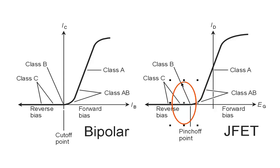But when we go into class C, we can't get a linear reproduction of the modulation envelope, and so the modulation will become distorted.